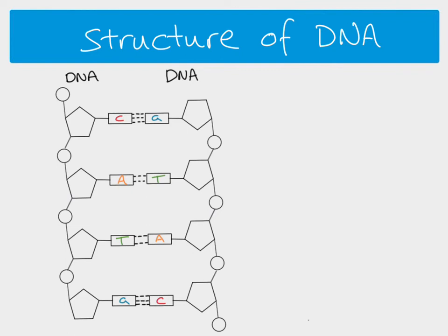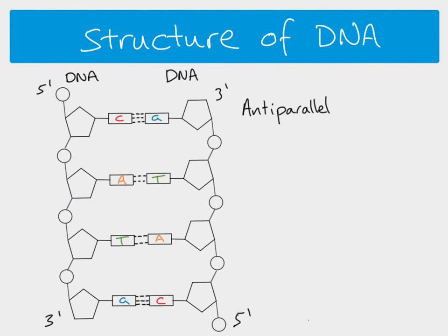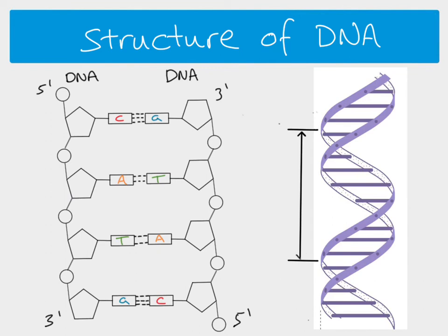An important feature of DNA is that it has a direction. One end is known as 5' and the other as 3'. When the two DNA molecules come together, one strand runs in the opposite direction to the other — the second molecule has its 5' end at the opposite end. So they're running in opposite directions; we say the two strands are anti-parallel to one another. When DNA forms its double helix, there are precisely 10 base pairs in a single rotation.